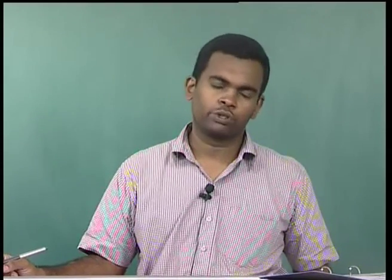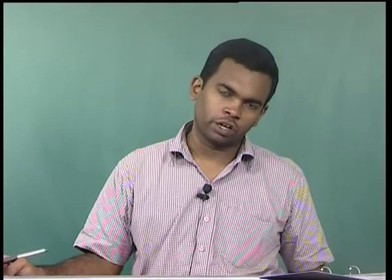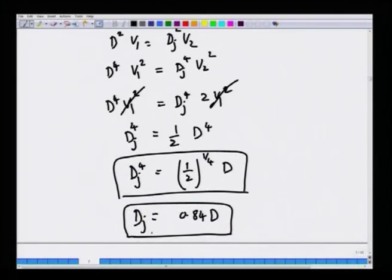Substituting V₂² = 2V₁² into continuity: d⁴ × V₁² = d_j⁴ × V₂² = d_j⁴ × 2V₁², so d_j⁴ = d⁴/2, giving d_j = (1/2)^(1/4) × d ≈ 0.84d. The jet thins because it accelerates upon exiting, and mass conservation then requires a smaller cross-sectional area. We will stop here; in the next lecture, the integral momentum balance will be applied to the same problem, and we will see that the answers are not exactly the same. Thank you.